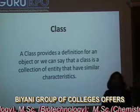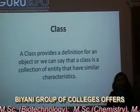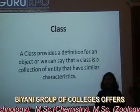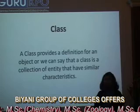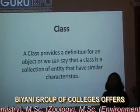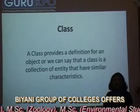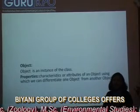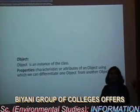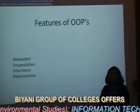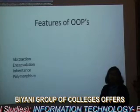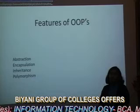Four terms usually used in Object Oriented Programming Languages are: first is Class. Class provides a definition for an object, or we can say a class is a collection of objects that have similar characteristics. Properties are the characteristics or attributes of an object. Next is Methods. Methods are operations performed on objects.